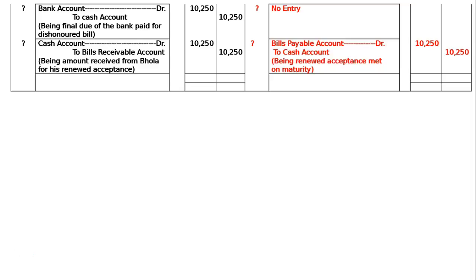Totaling the journal: for Ammar it is Rs.71,000 minus Rs.150, and for Bhola the totaling will be Rs.50,750. This is the final answer.